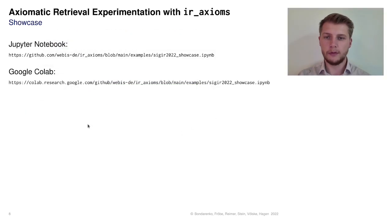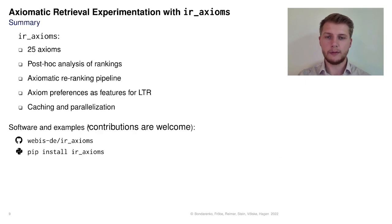As I have shown, it is easy to use IR axioms to analyze retrieval models or to re-rank initial retrieval results. But of course IR axioms has so much more to offer. Our built-in evaluation tools can analyze a ranking's consistency with 25 reference axioms and show examples that help you build a better ranking model. Furthermore, IR axioms supports axiomatic re-ranking with quicksort and can generate features for learning to rank.